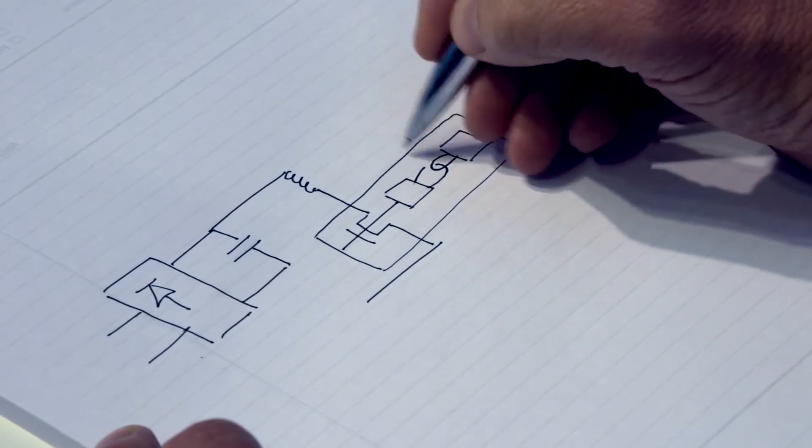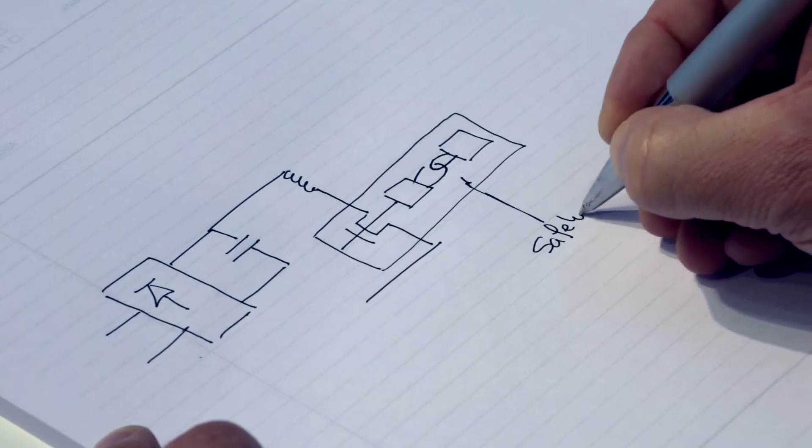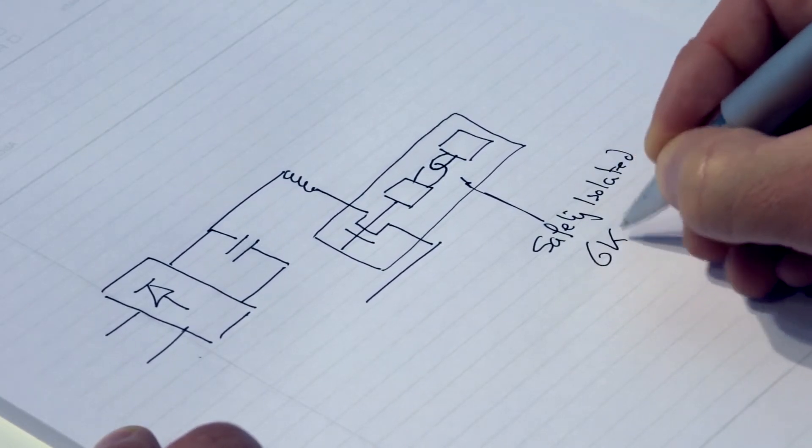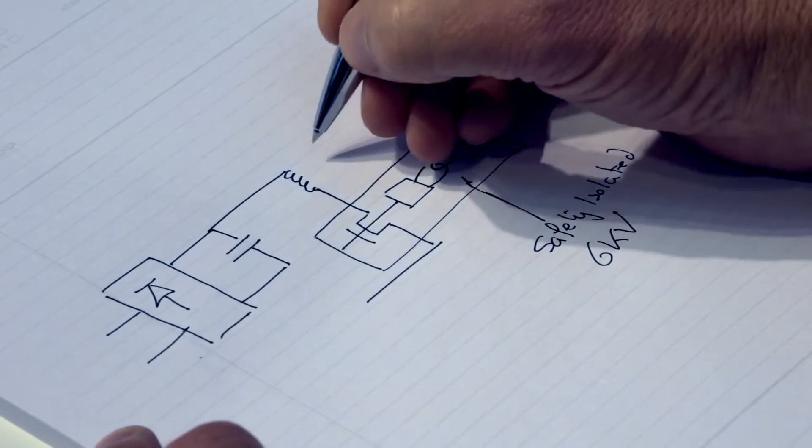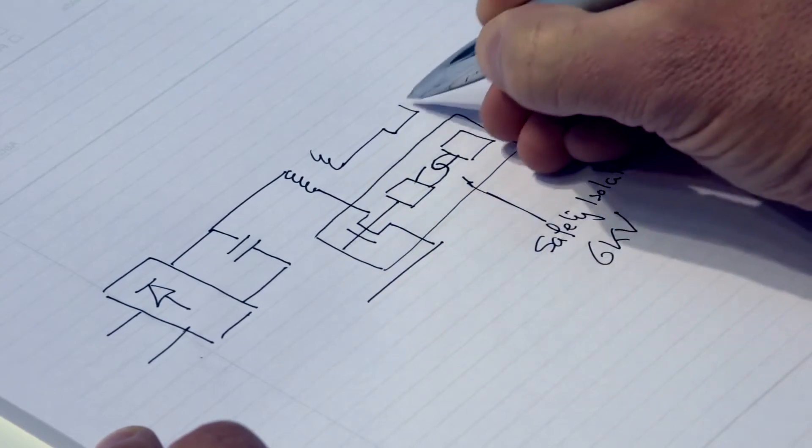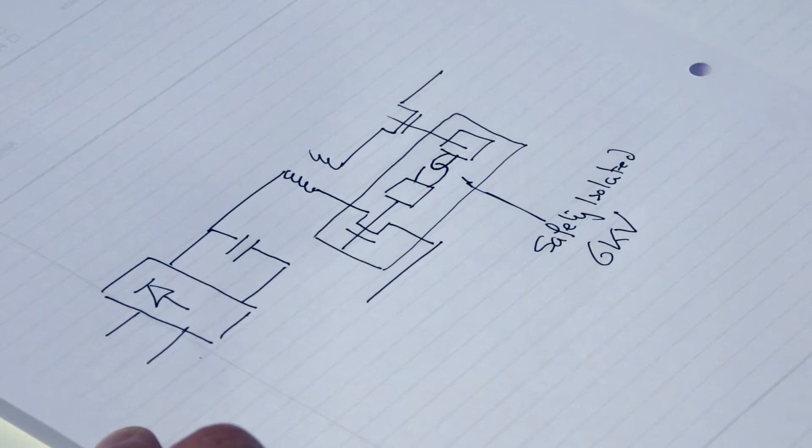This is the isolation barrier. This is safety isolated to six kilovolts and the secondary side remains simple with the addition of a synchronous rectification MOSFET that is controlled by this device.